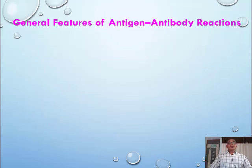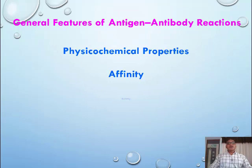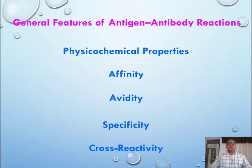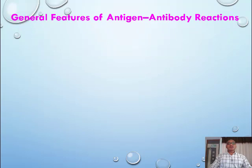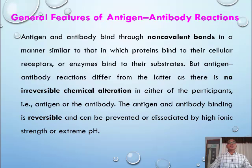Now we are going to study the general features of antigen and antibody reactions. The general features are: physicochemical properties, affinity, avidity, specificity, and cross-reactivity. Antigen and antibody bind via non-covalent bonds in a manner similar to that in which proteins bind to their cellular receptors or enzymes bind to their substrates.